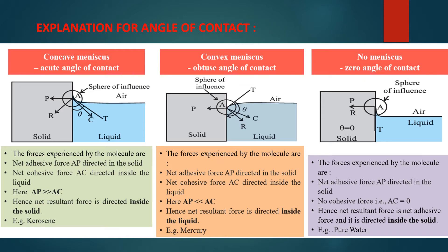Case 2 — convex meniscus, obtuse angle of contact: here the net adhesive force is less than the net cohesive force, so the resultant force is directed inside the liquid. Hence the liquid meniscus assumes a convex shape and the angle of contact is obtuse. Case 3 — no meniscus or plane meniscus, zero angle of contact: here there is no cohesive force. The net force is nothing but the net adhesive force directed inside the solid. Hence the liquid level is plane and the angle of contact is zero.